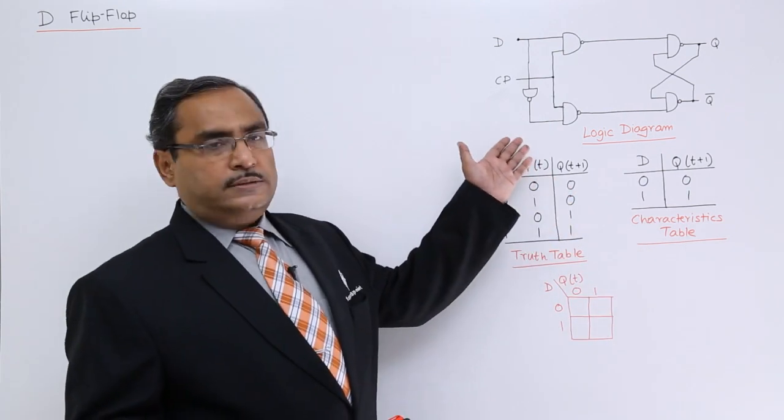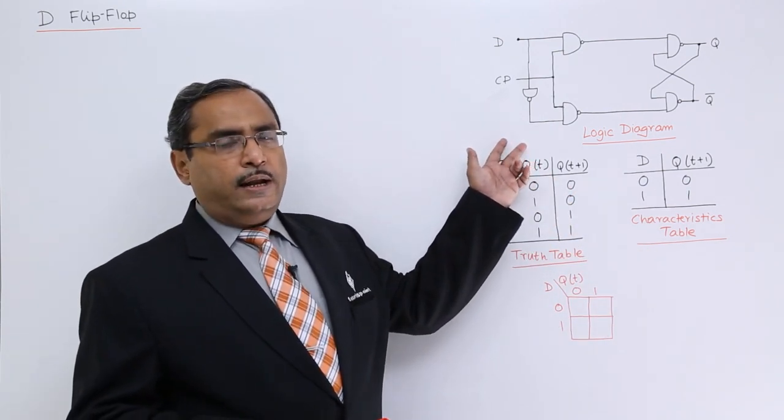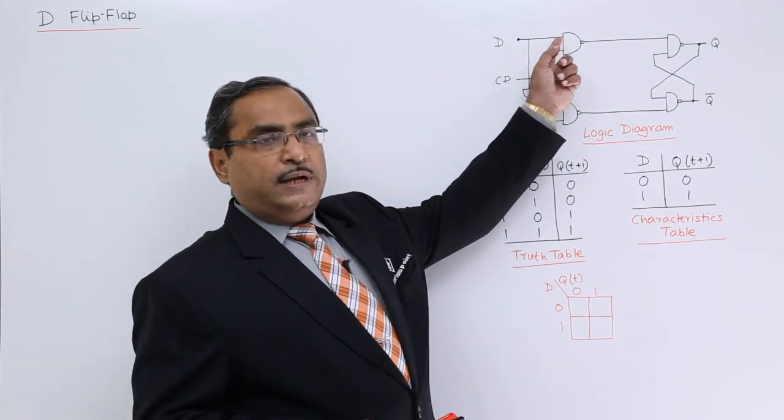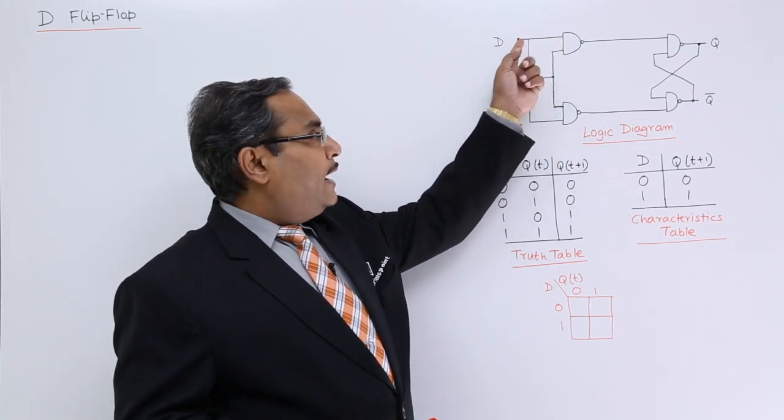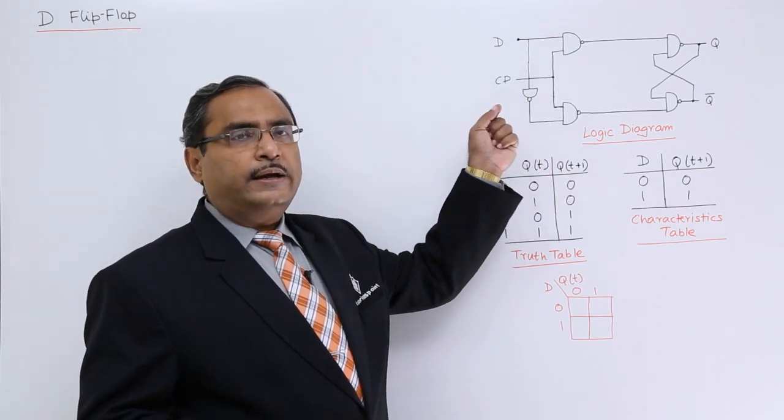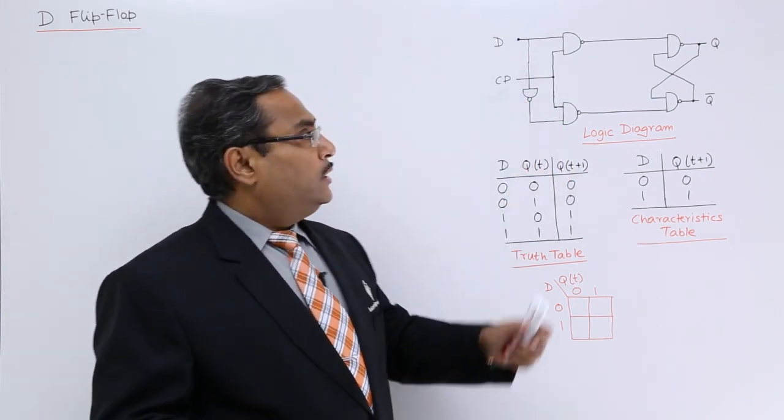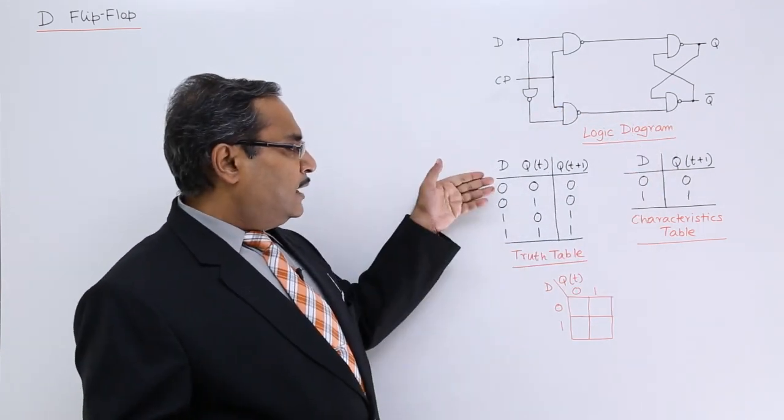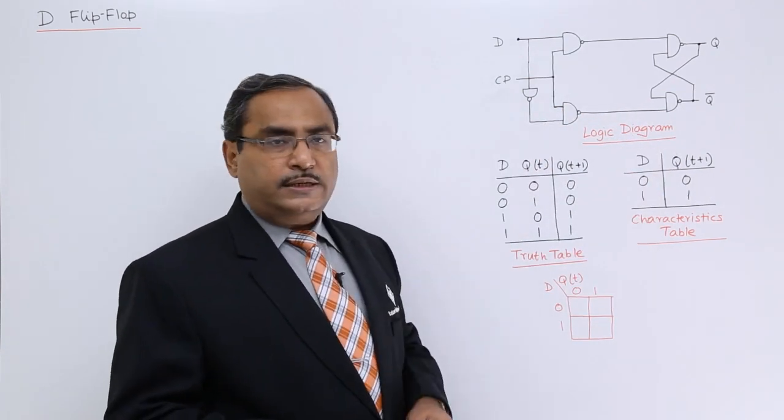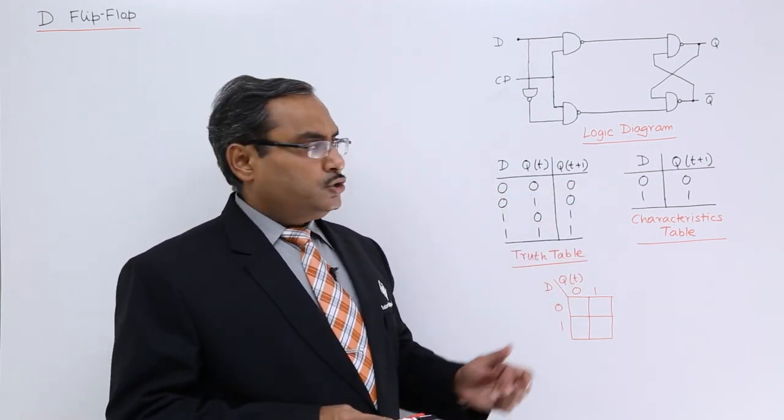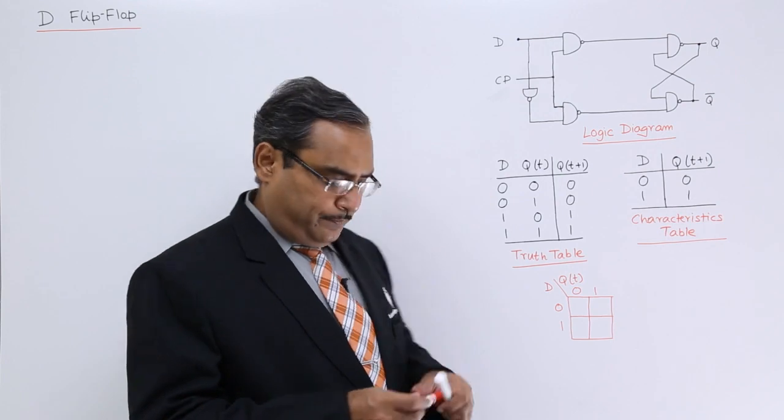Now here is the circuit diagram or the logic diagram of D flip-flop. Here you can find that one input has been directly connected and another input is passing through one NOT gate to make the input complemented. And this is the clock and this is the respective circuit. This is the truth table of this circuit. Here D and QT will decide the final output. Let us explain some of them.